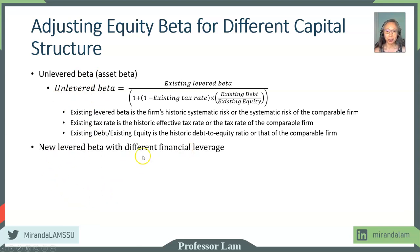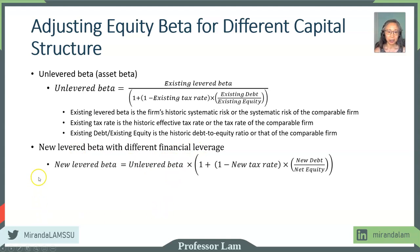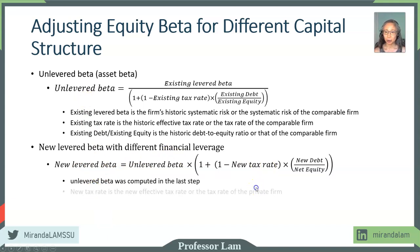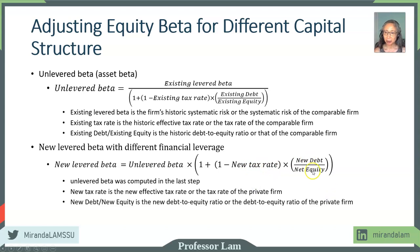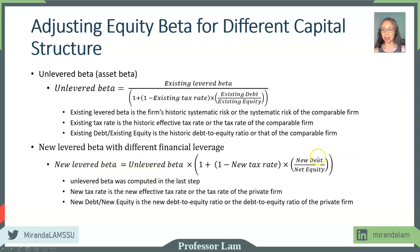Step two is you introduce the new financial leverage. The new levered beta is the unlevered beta that you computed in the last step, and then you put in the new tax rate as well as the new debt to equity ratio. The unlevered beta should be lower than the levered beta. As long as the debt to equity ratio is greater than zero, the entire term will be greater than one, so the levered beta will be higher than the unlevered beta. The only time they are the same is if debt is zero.